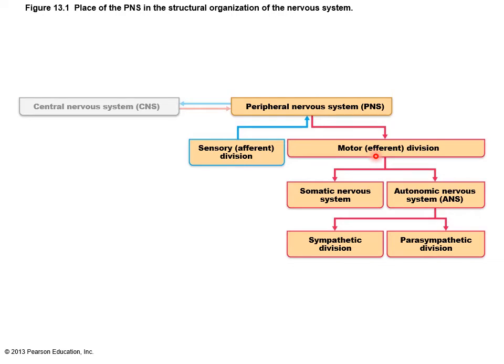The motor pathway can be subdivided into the somatic nervous system, which connects to skeletal muscles — those you control. Those are the effectors. Then you have the autonomic nervous system, where the effectors are things you don't control, like the heart and smooth muscle found in internal organs, blood vessels, and the glands of the body.